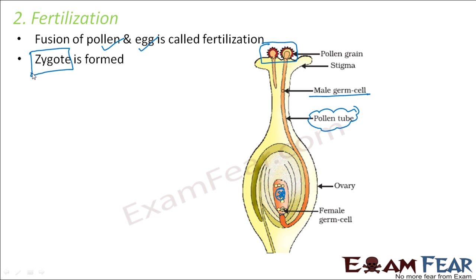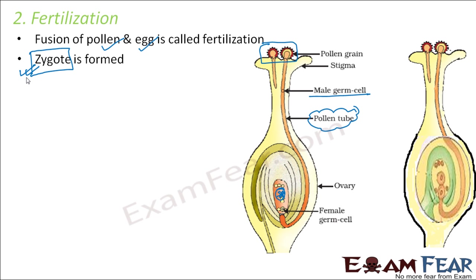To summarize: fertilization takes place inside the ovule. By pollination, pollen grains reach the stigma of the female reproductive part. The inner wall of the pollen grain forms a pollen tube, which passes through the style and reaches inside the ovule within the ovary. The male gametes carried by the pollen tube are released inside the ovule, where the female gametes are already present. The male and female gametes fuse to form a single cell structure called the zygote.